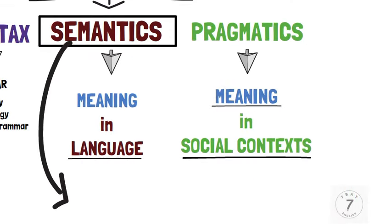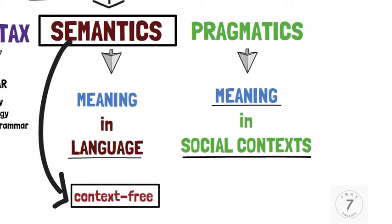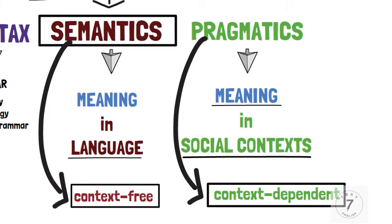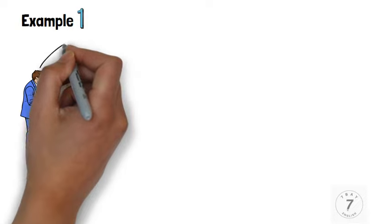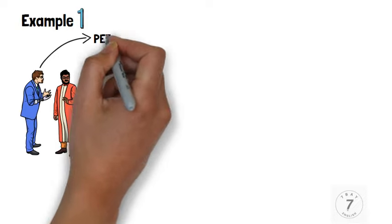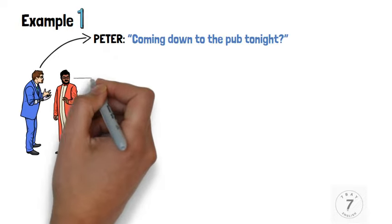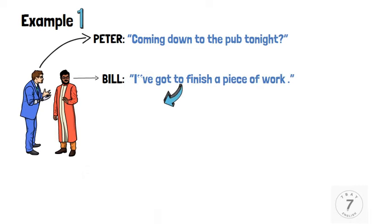Note that semantics is context-free. On the other hand, pragmatics is context-dependent. Let's check the following two examples. Example 1: Peter says, 'Coming down to the pub tonight?' Bill says, 'I've got to finish a piece of work.'